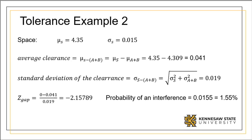The standard deviation of the clearance is found to be 0.019. Using the average and standard deviation for the gap, we find that the likelihood of an interference to the left of the Z value under the normal distribution, the likelihood is 1.55%.